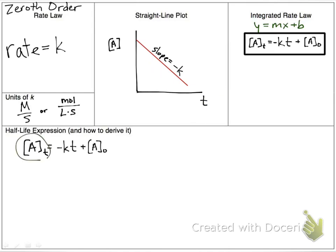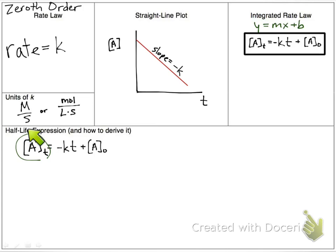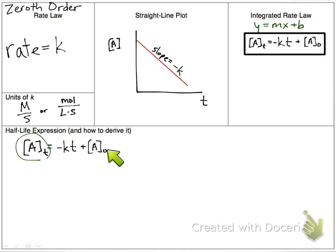Next we're going to write our half-life expression, derived from the integrated rate law. We're going to substitute the concentration of A at any given time for half of our initial concentration. The half-life means the time it takes for the initial concentration to cut in half. If you started with one molar, the first half-life occurs once it's gotten down to 0.5 molar.